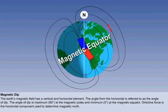The angle of dip is referred to as inclination, and the line of zero dip at the magnetic equator is referred to as the aclinic line.